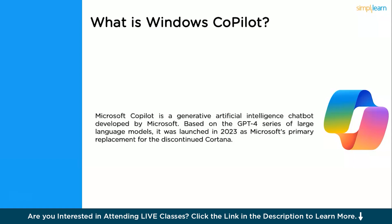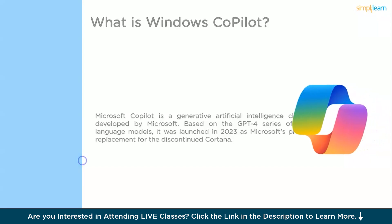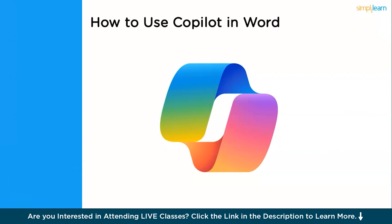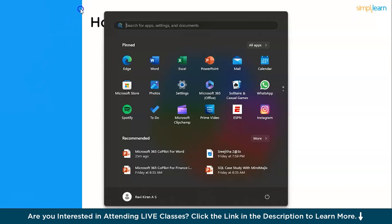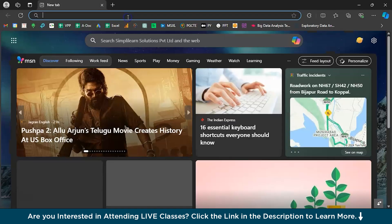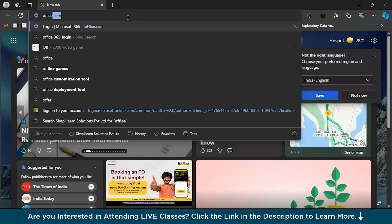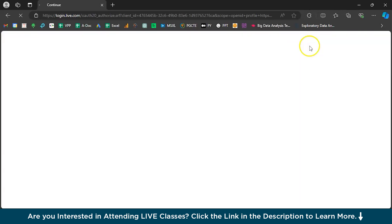Now that we have a brief idea of what exactly Copilot is, let's move on to how to use Copilot in Word. To start using Copilot in Word, pull up Windows and use the Edge browser. Once you log in, type in Microsoft or go to office.com to land on the page directly.